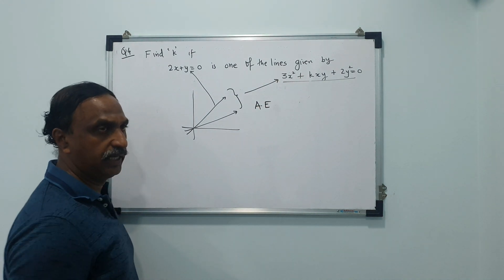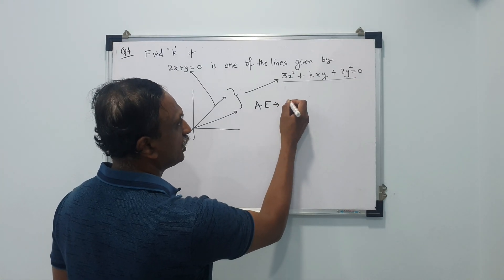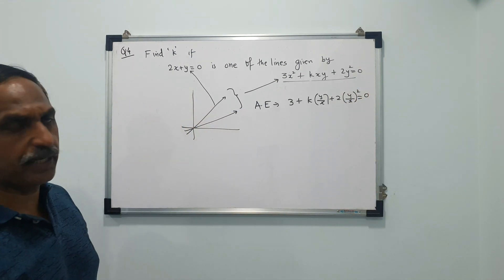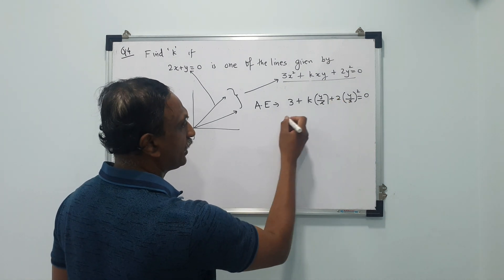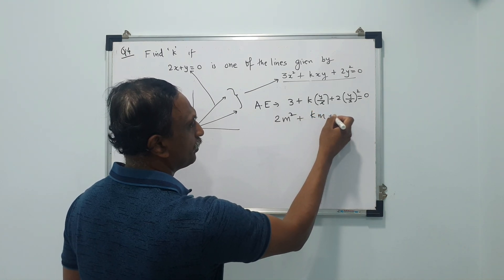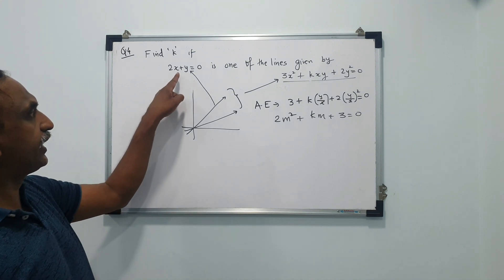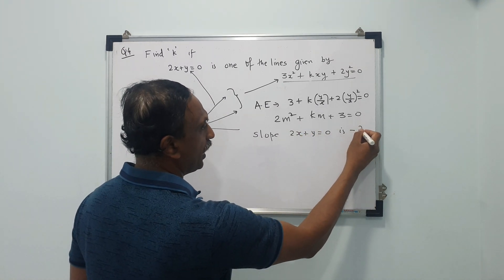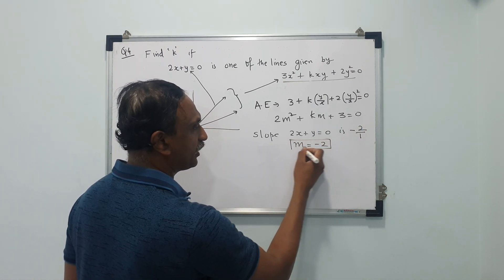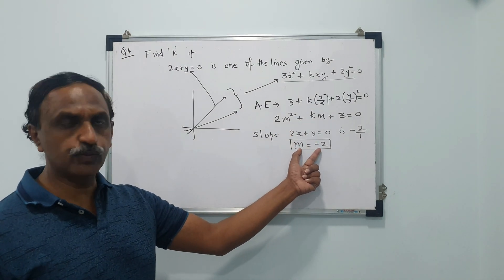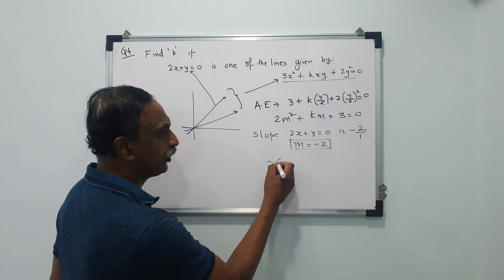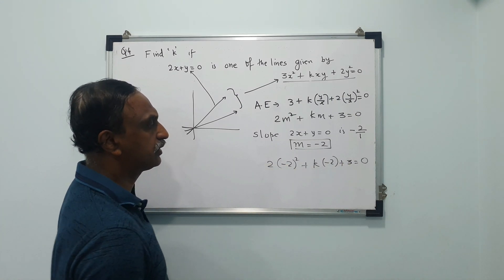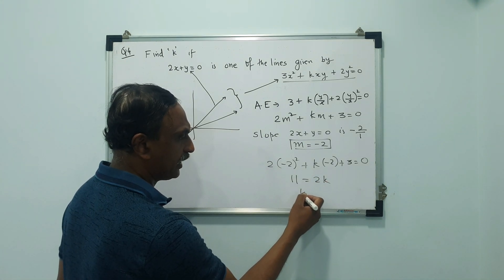The auxiliary equation is obtained by dividing by x²: 3 + k(y/x) + 2(y/x)² = 0. Replacing y/x by m gives 2m² + km + 3 = 0. The slope of 2x + y = 0 is -a/b = -2. So m = -2 must satisfy the auxiliary equation: 2(-2)² + k(-2) + 3 = 0, giving 8 - 2k + 3 = 0, so 11 = 2k, therefore k = 11/2.